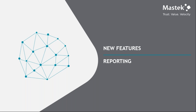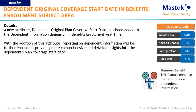Moving on to the three REST category features, which are all pertaining to reporting. The first is the dependent original coverage start date in the benefits enrollment subject area. A new attribute — the dependent original plan coverage start date — has been added in the dependent information dimension of the benefits enrollment real-time subject area in OTBI. If you want to view this data in a report, you can simply add the field in your OTBI report and the data will be available for the dependents.